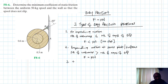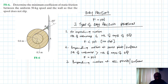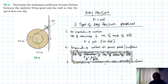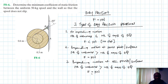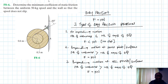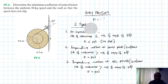The third type is where we have impending motion at all contacting points or surfaces. Again, the number of unknowns exceeds the available equations of equilibrium, so we use additional equations from the friction concept: F equals mu times N.